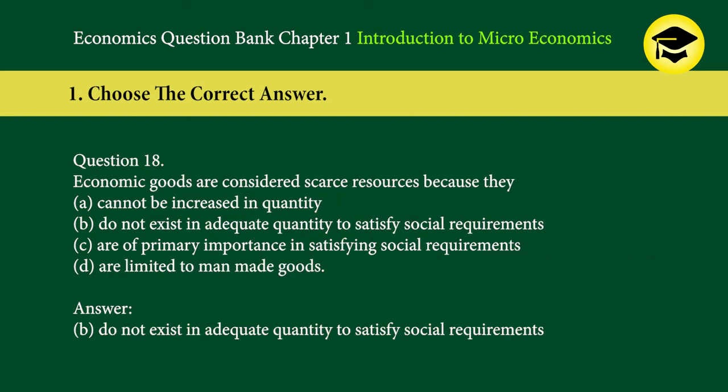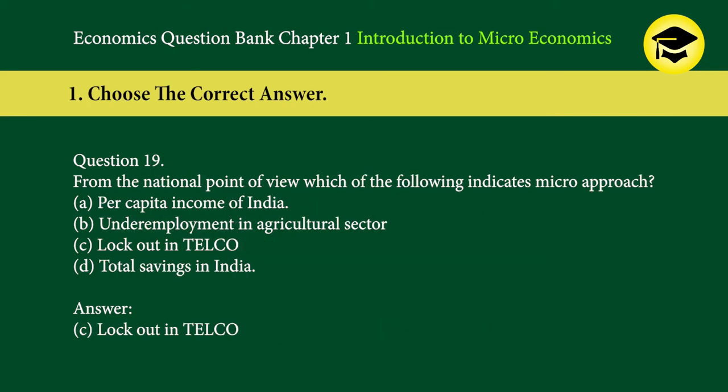Question 18: Economic goods are considered scarce resources because they — A. cannot be increased in quantity, B. do not exist in adequate quantity to satisfy social requirements, C. are of primary importance in satisfying social requirements, D. are limited to man-made goods. Answer: B. Do not exist in adequate quantity to satisfy social requirements.